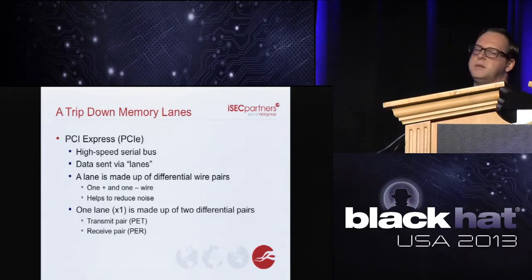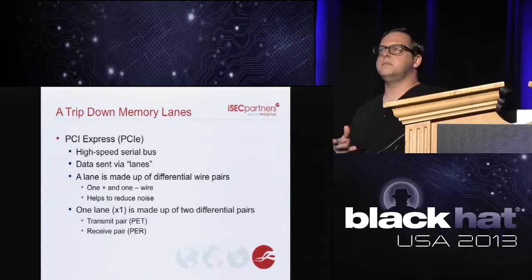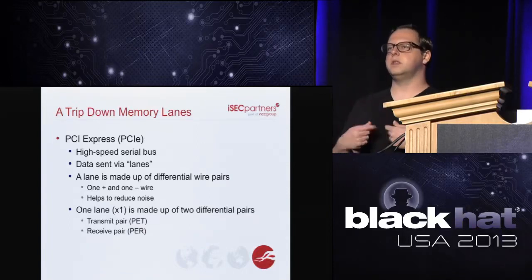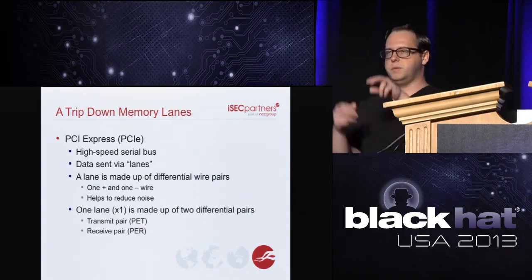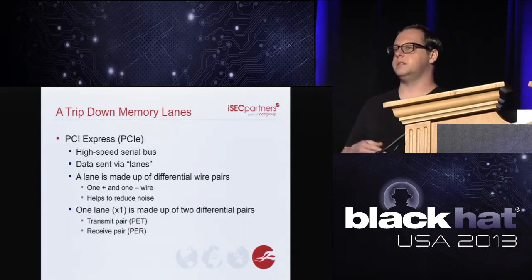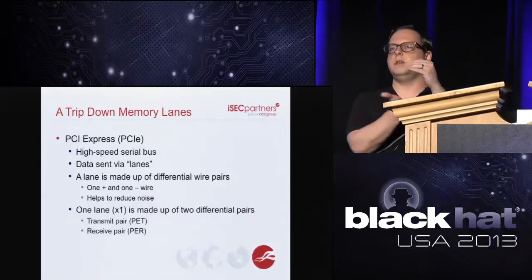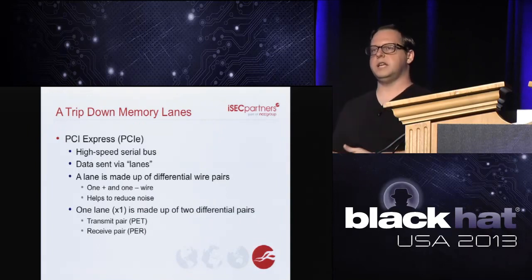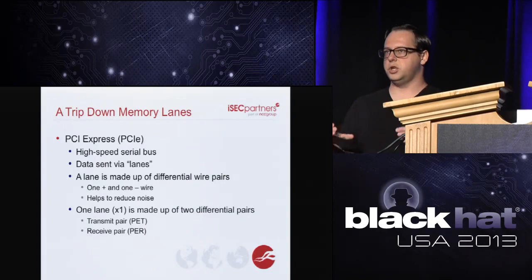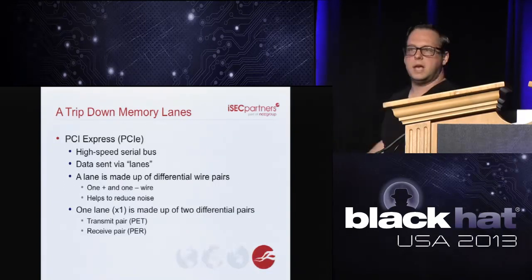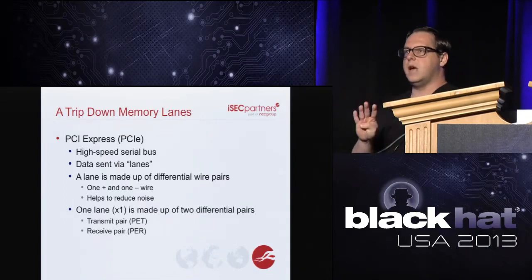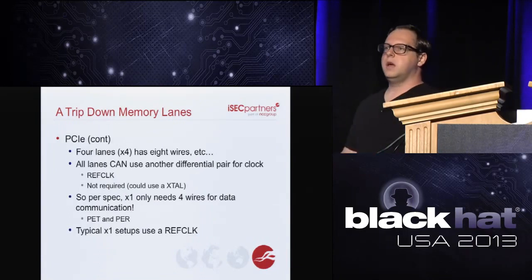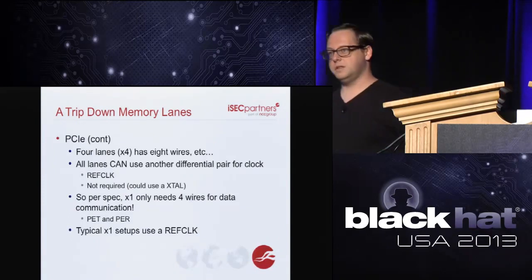PCI Express is a high-speed serial data bus. Data is sent via lanes, where a lane is made up of two simplex data paths — one transmit, one receive — each made up of two differential pairs. A differential pair has one signal going positive and another going negative; when they reach the device, it compares the difference, which is great for interference rejection. Per the PCI SIG specification, the minimum wires needed for PCI Express is four. A reference clock is optional — you can get away with a 2.5 GHz oscillator at plus or minus 300 ppm.